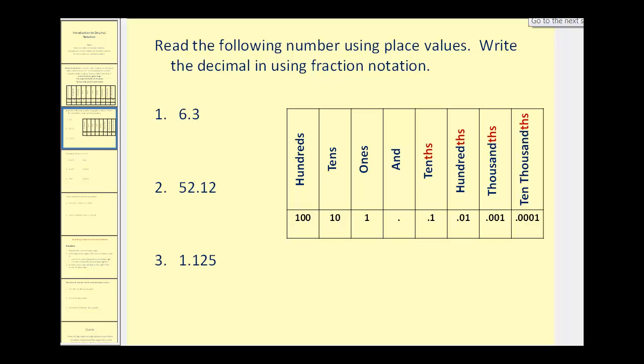We want to be able to read each of these numbers and then write them using fractional notation. So for 6.3, we would read this 6 and, for the decimal point, 3 tenths. So 6.3 equals 6 and 3 tenths. This is a mixed number. If we wanted to write this as a fraction, we could convert this to an improper fraction. 10 times 6 plus 3 would be 63 tenths.